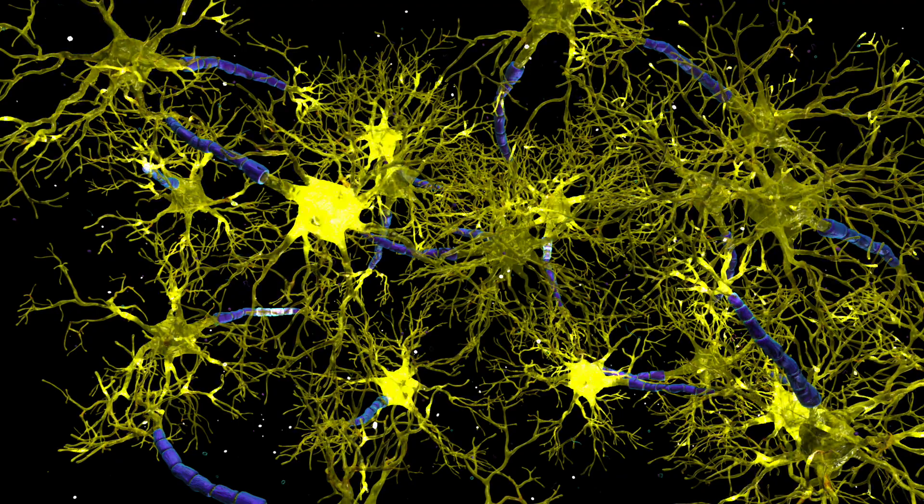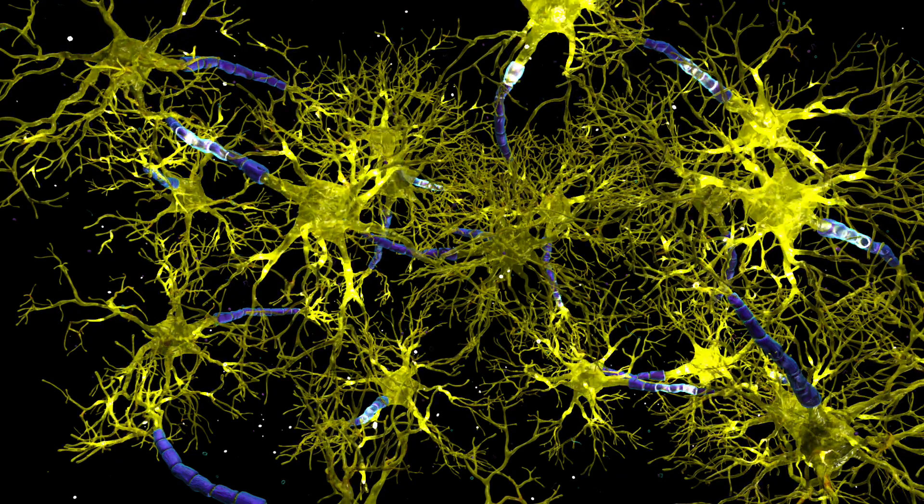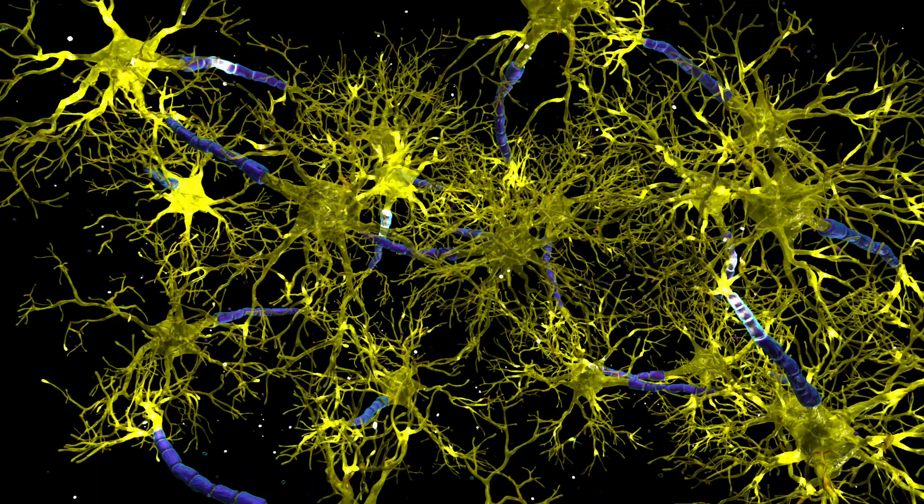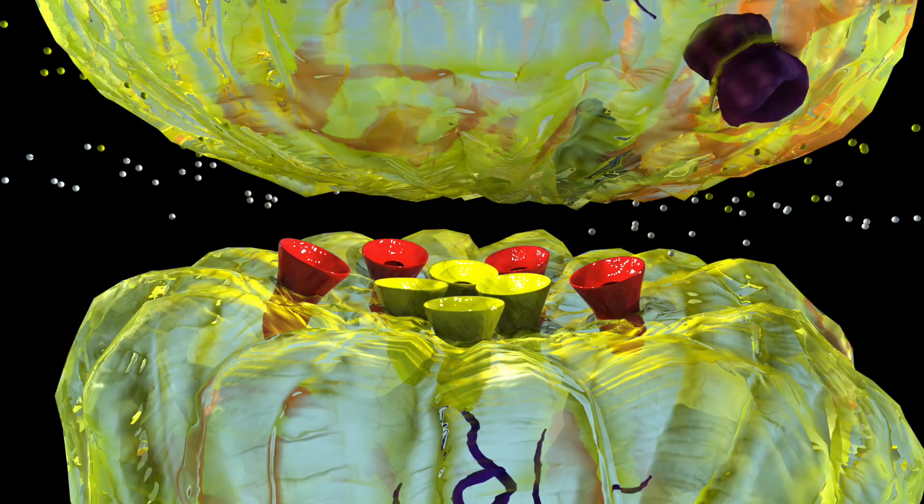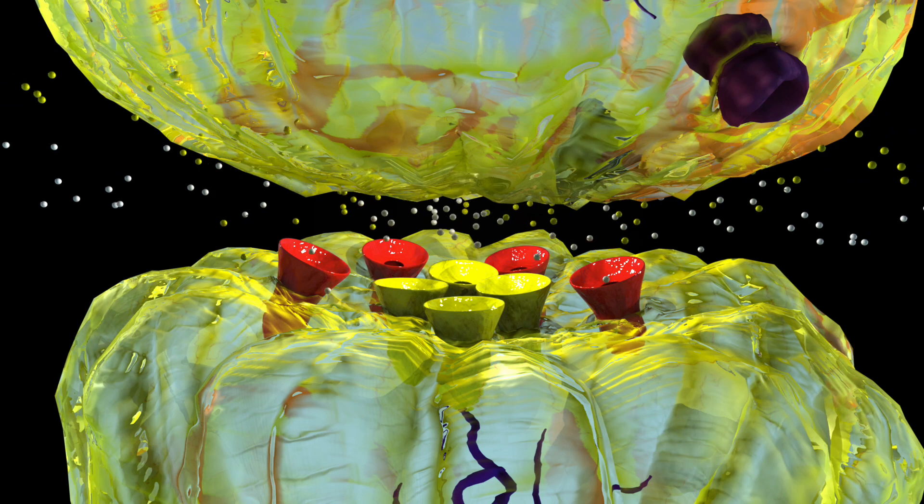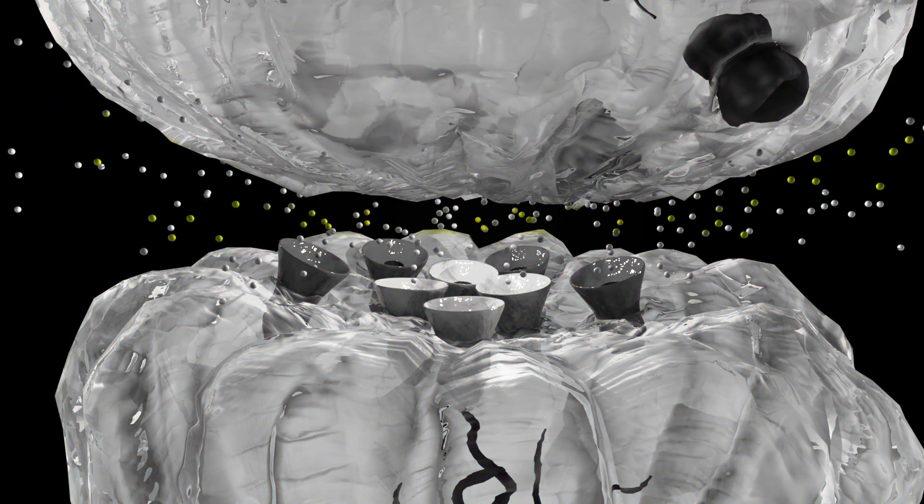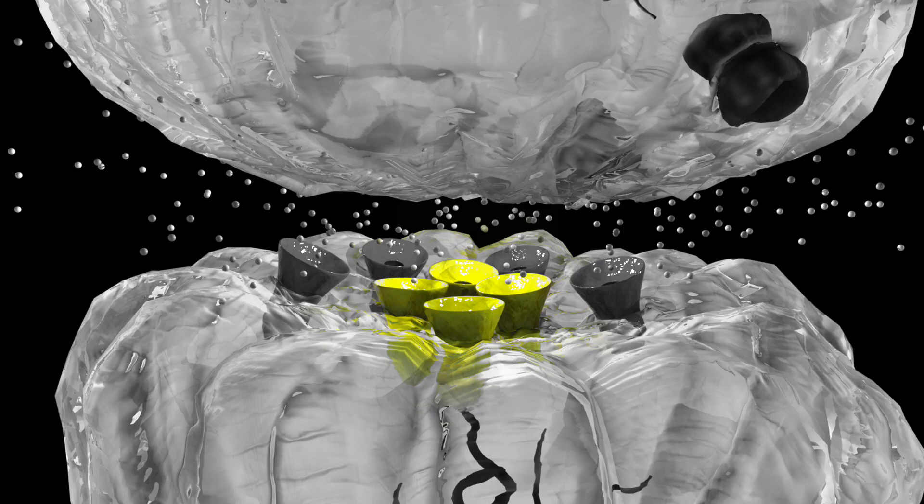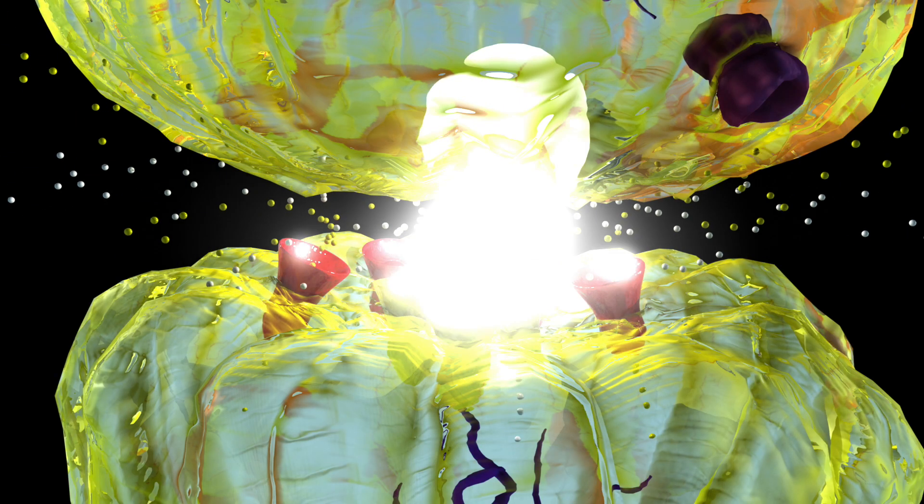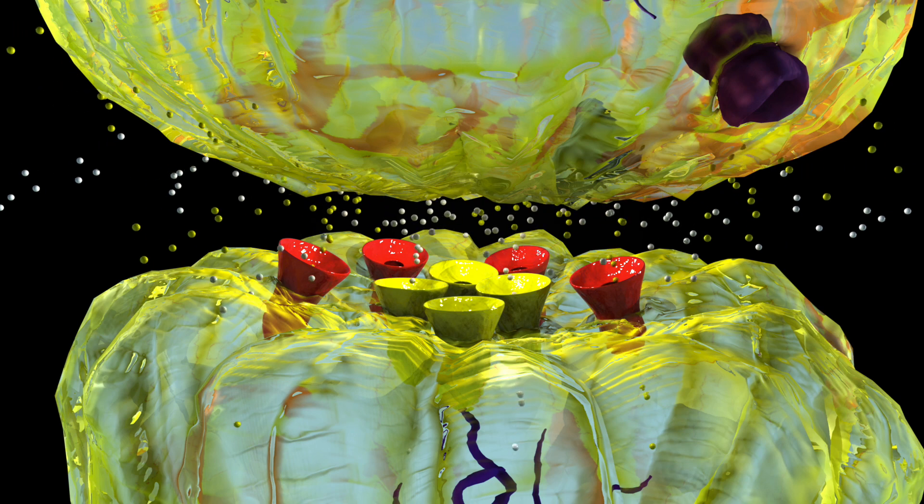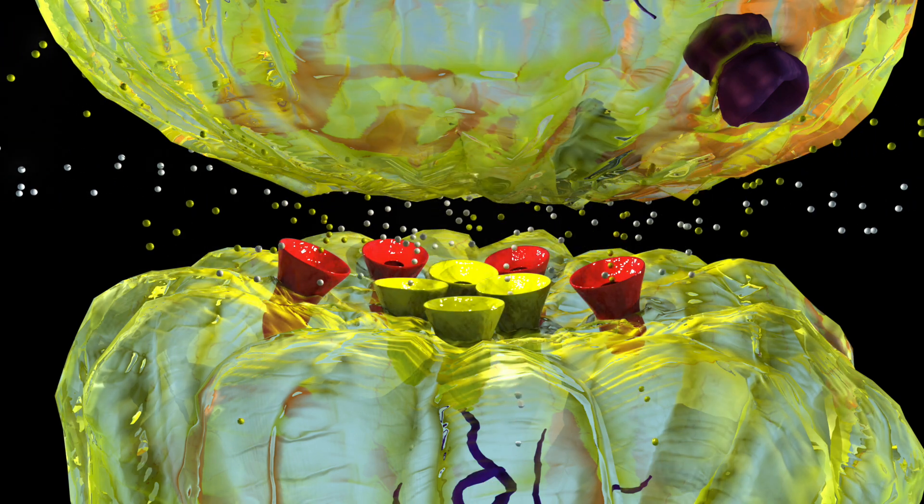Neurons transmit an electrical signal by opening sodium and calcium channels on the nerves. This is sodium. This is the sodium channel. This is calcium. This is the calcium channel. These positively charged ions transmit the electrical signal throughout the brain.